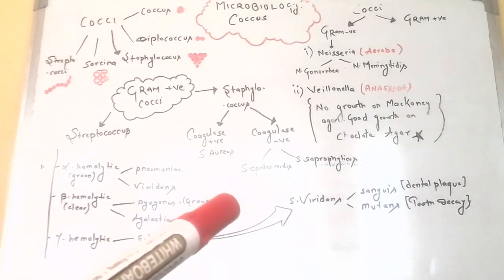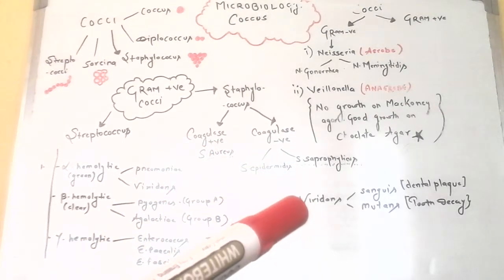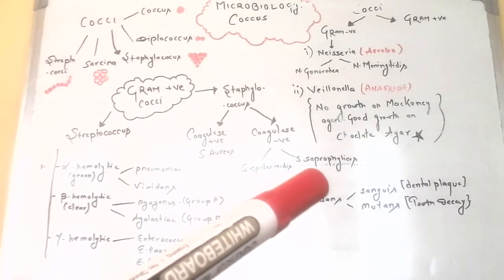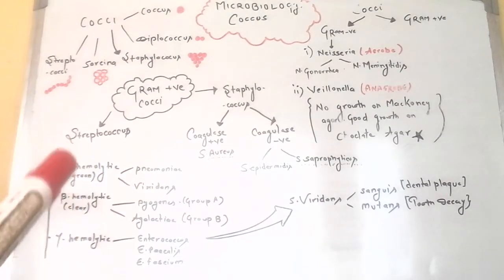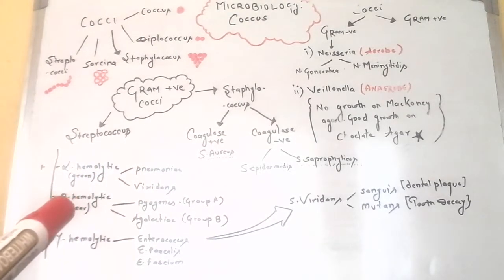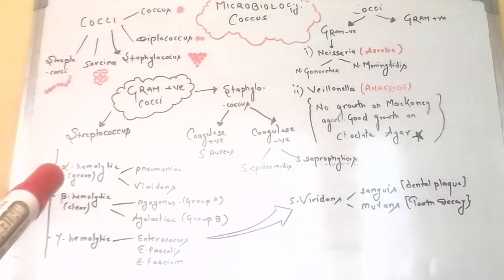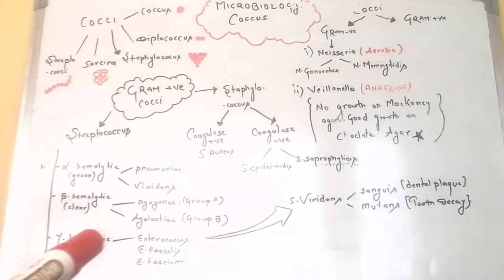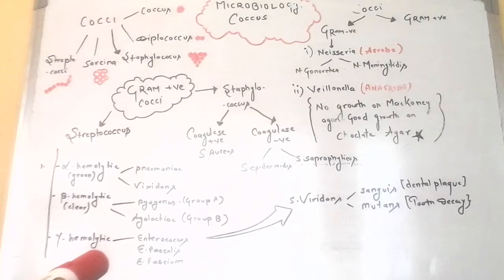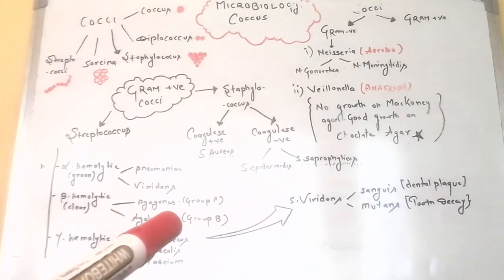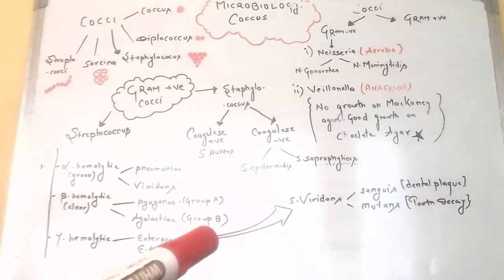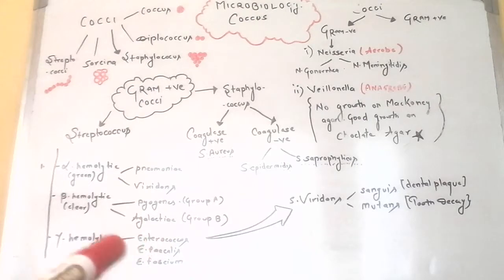Coagulase-positive staphylococci include S. aureus, and coagulase-negative include S. epidermidis and S. saprophyticus. Streptococcus classification is based on hemolysis: alpha hemolytic, beta hemolytic, and gamma hemolytic. Alpha hemolytic includes S. pneumoniae and viridans streptococci. Beta hemolytic includes S. pyogenes, divided into group A and group B, and S. agalactiae. Gamma hemolytic includes Enterococcus.